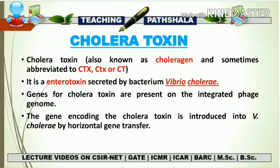One interesting fact about Vibrio cholerae is that a normal Vibrio cholerae strain is not responsible for the production of a cholera toxin and will not cause cholera. Cholera occurs when Vibrio cholerae is infected with a phage, and that phage integrates part of its genome into the genome of Vibrio cholerae. That integrated genome then produces a protein called the cholera toxin. This transfer of DNA from one organism to another is called horizontal gene transfer, through which the phage transfers its genetic material into Vibrio cholerae, causing it to produce the cholera toxin.